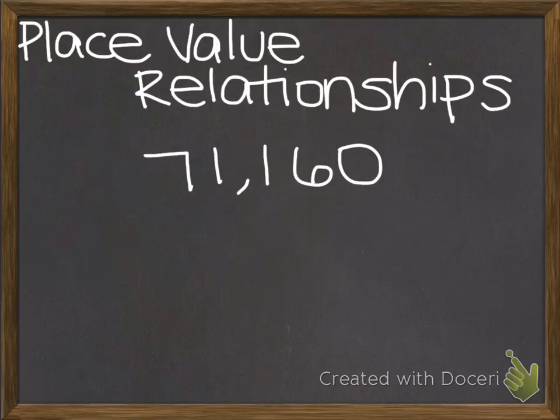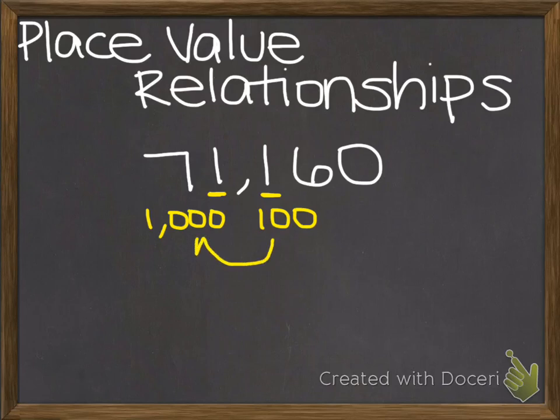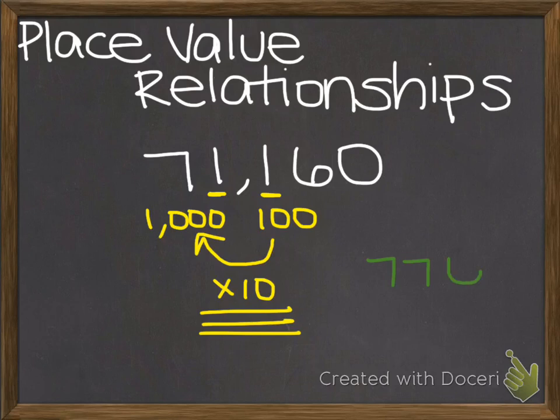Last but not least, I want to remind you of place value relationships. As you can see in this number, 71,160, I have two numbers that are side by side that are the same digit. The one in the hundreds place is worth one hundred. It has a value of one hundred. The one in the thousands place has a value of one thousand. What I want you to remember is that when you have two digits side by side, the digit to the left is ten times greater than the digit to the right. This would be the same, to give you another example, if you had seven hundred seventy-six.